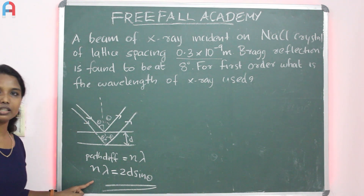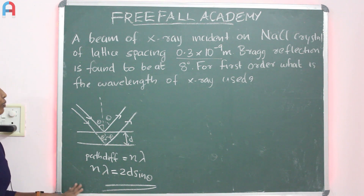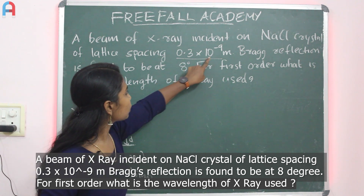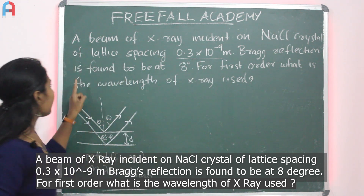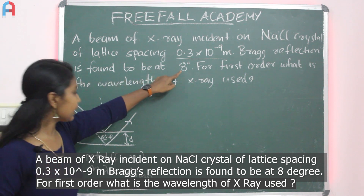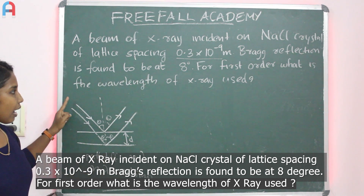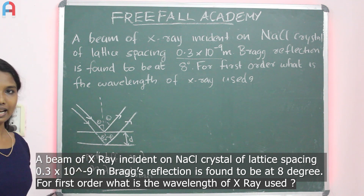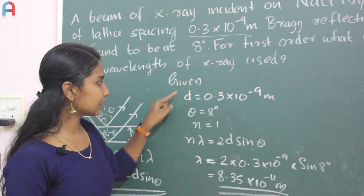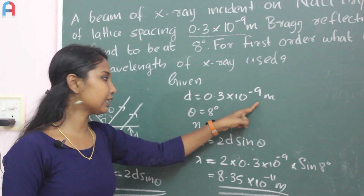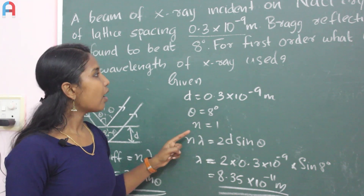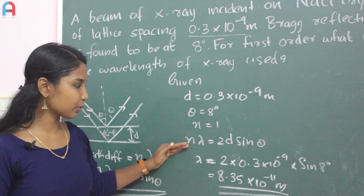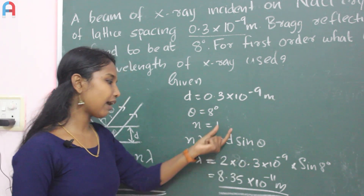This Bragg equation is used to solve the next problem. The interplanar distance d equals 0.3 × 10⁻⁹ meters, and Bragg reflection is found at theta = 8 degrees. For first order, n = 1. Direct substitution into n lambda = 2d sin theta gives the wavelength.